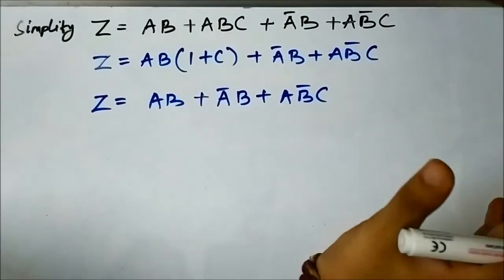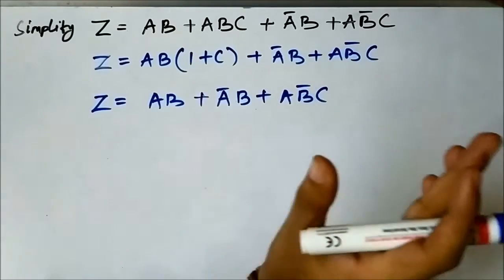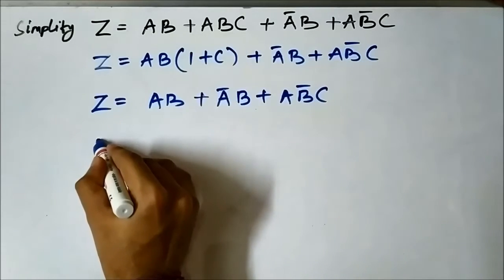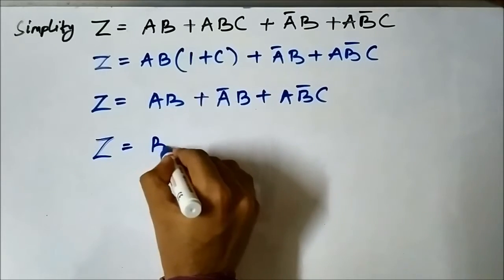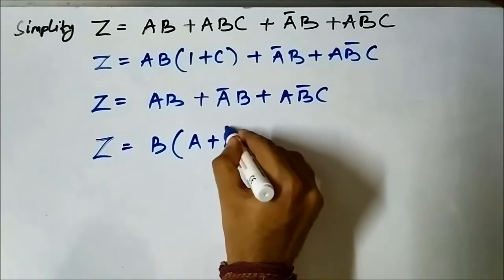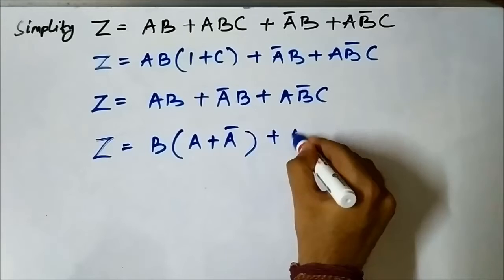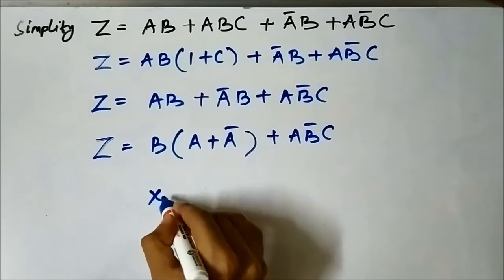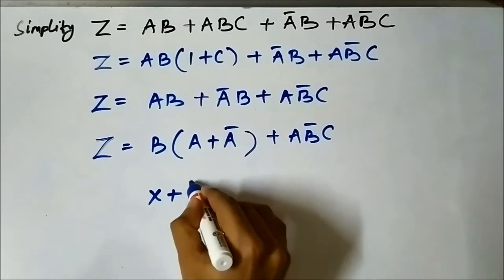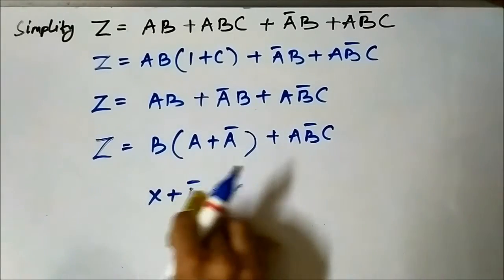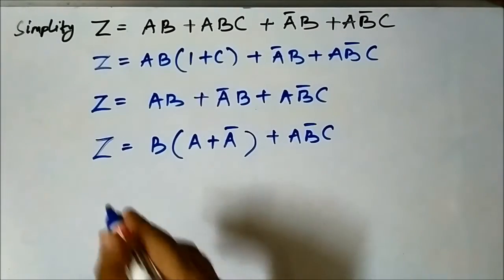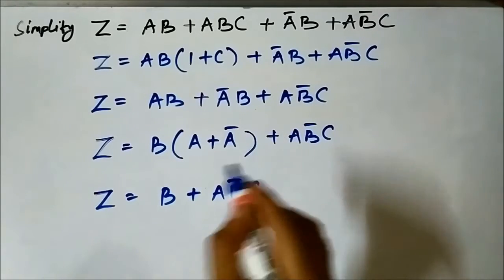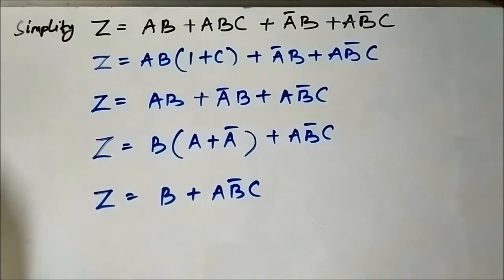Let us find common terms in the remaining expression. In the two terms ab and āb, the variable b is common. Taking b as common gives b(a + ā). We apply the boolean algebra rule that any variable OR-ed with its complement gives one, so a + ā = 1. Therefore we get z = b + ab̄c.